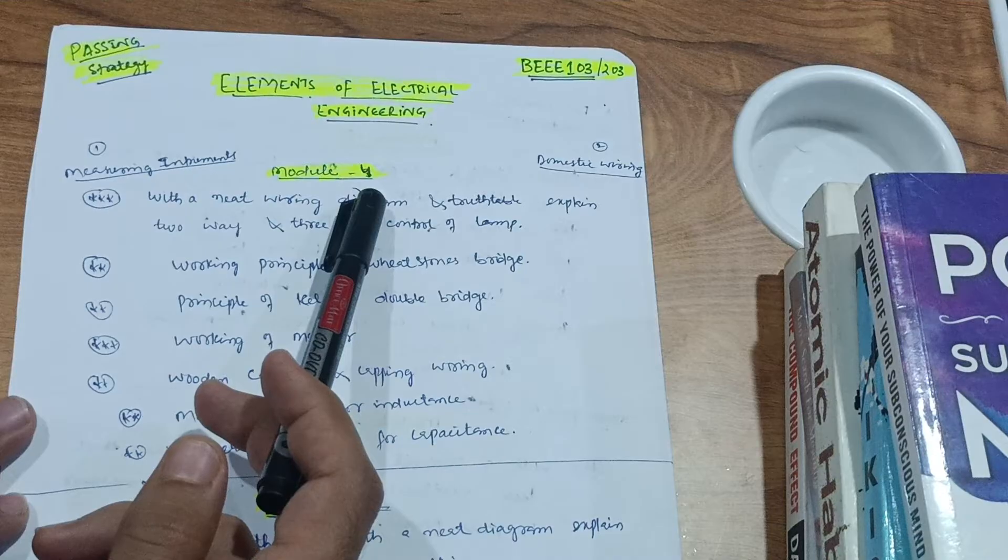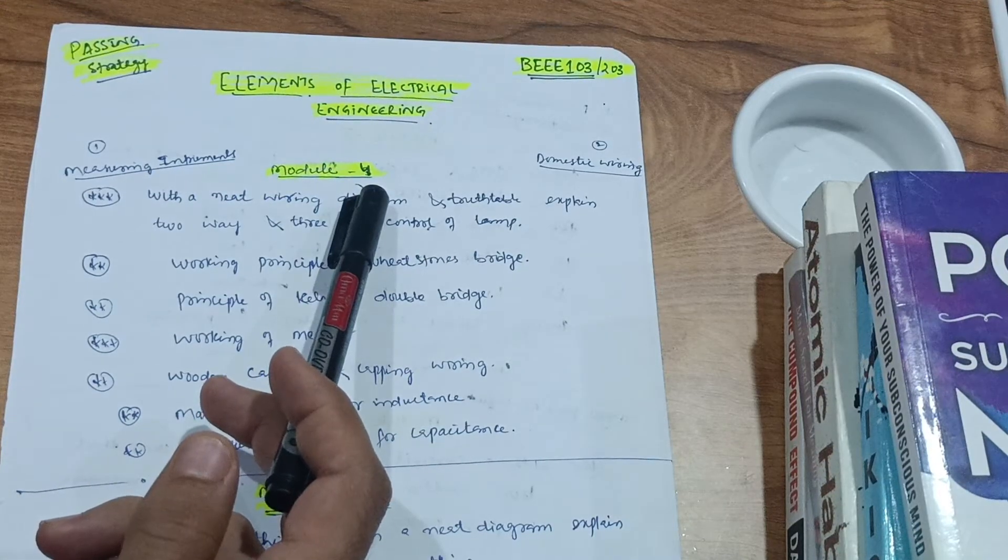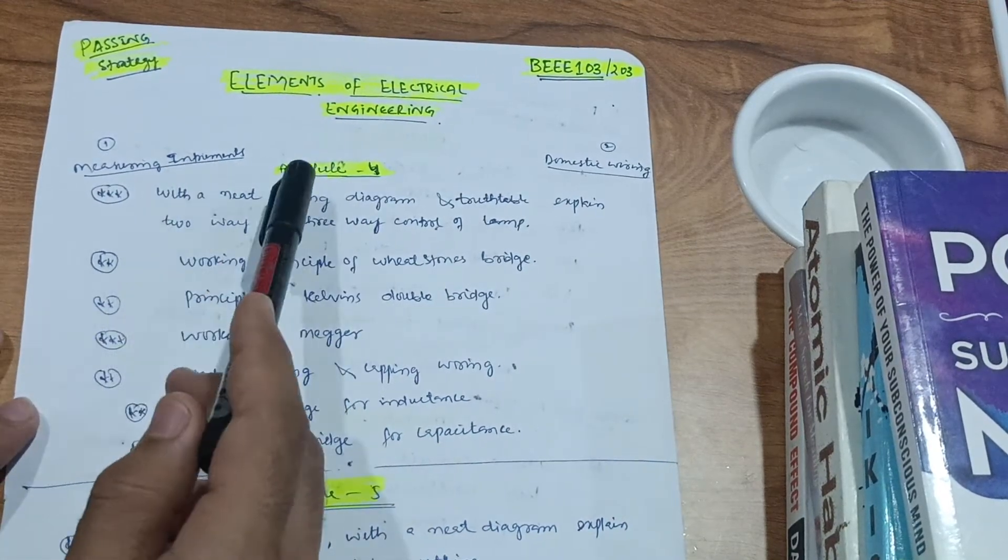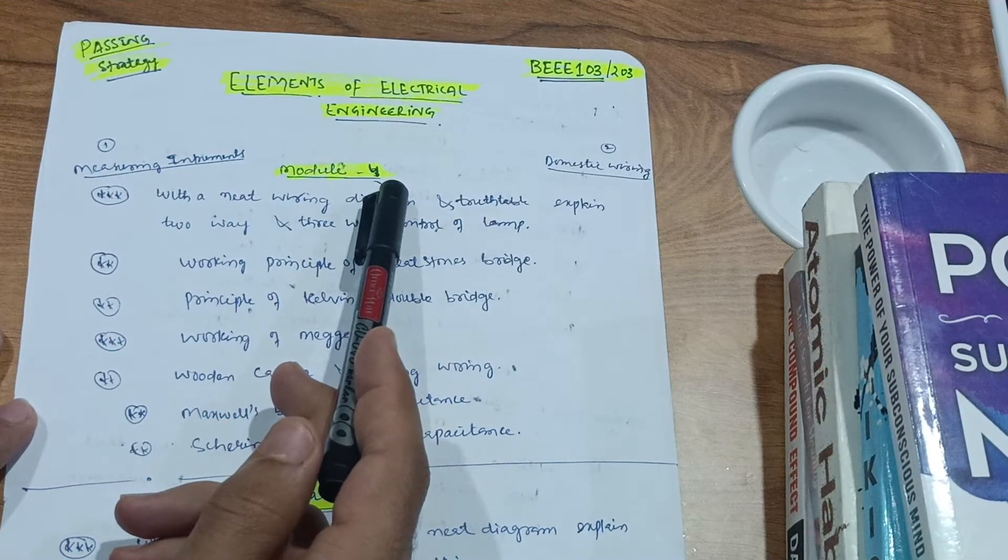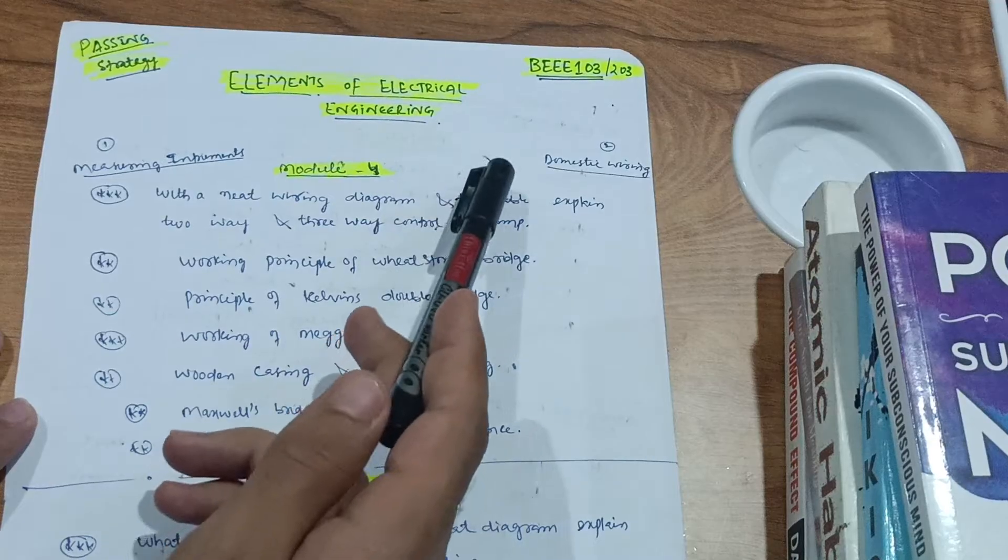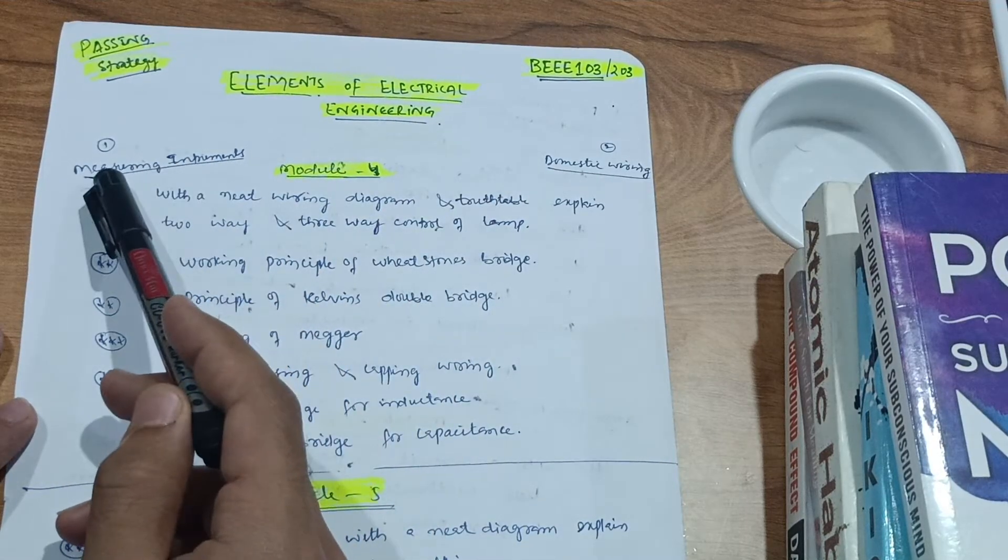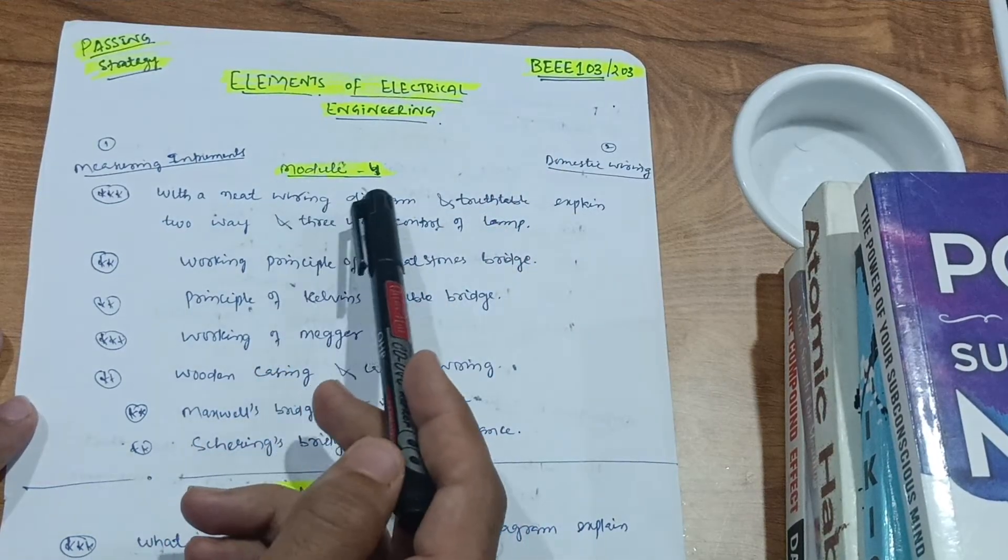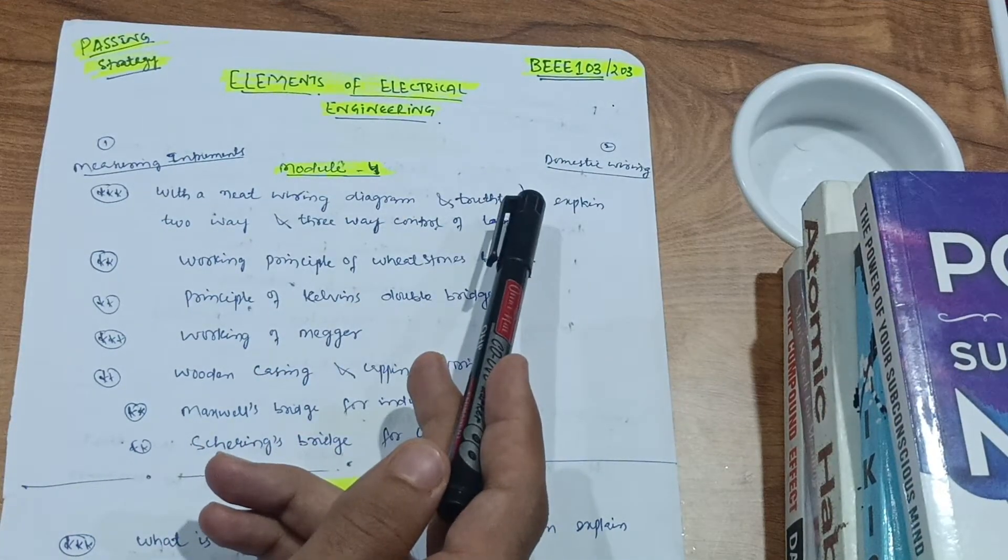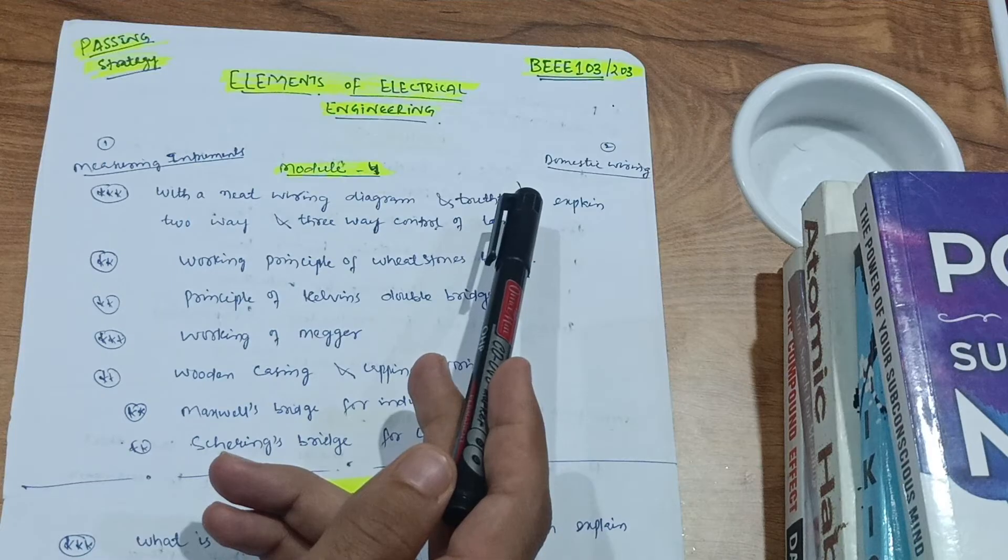If you want to score also, this video is for you. You are on the correct platform. In Module 4, as I am taking here, it is the passing module. In the first chapter there is the measuring instruments and next one is the domestic wiring.